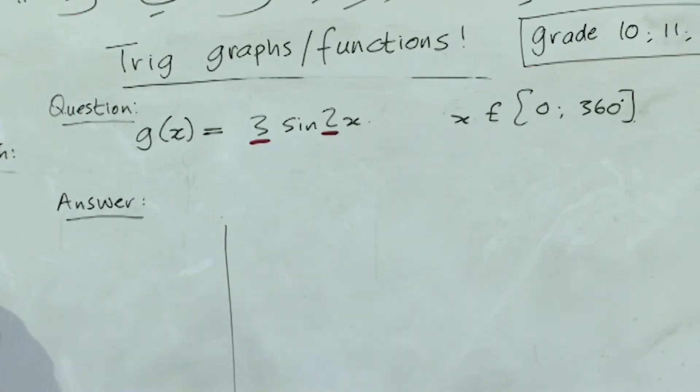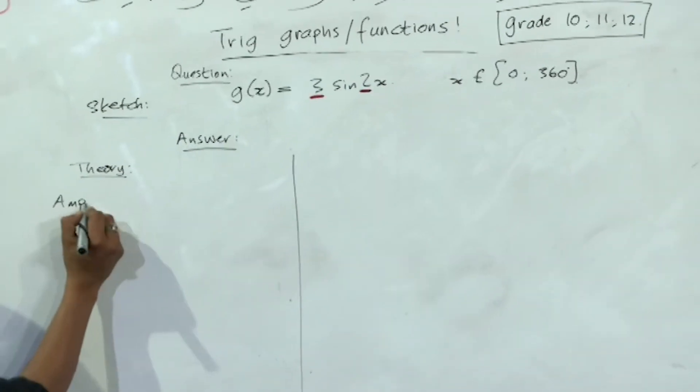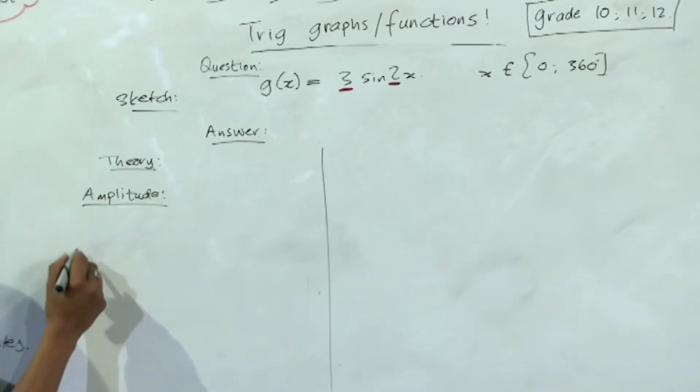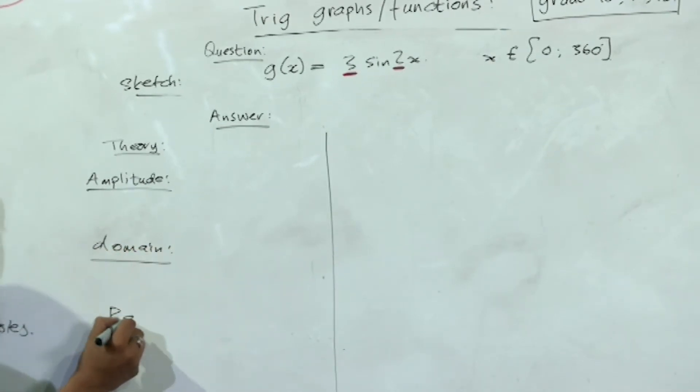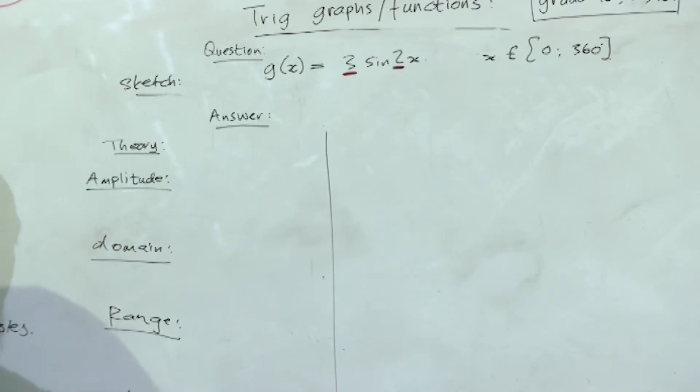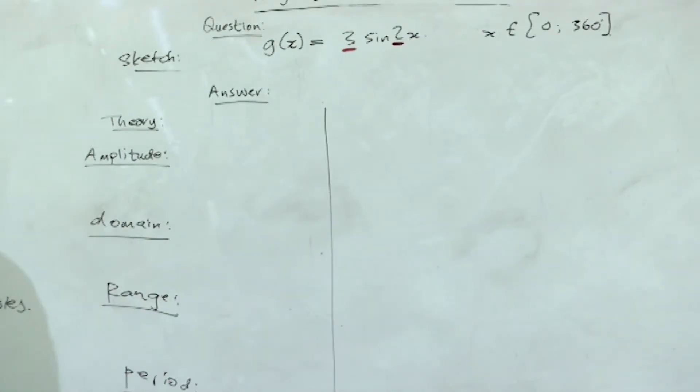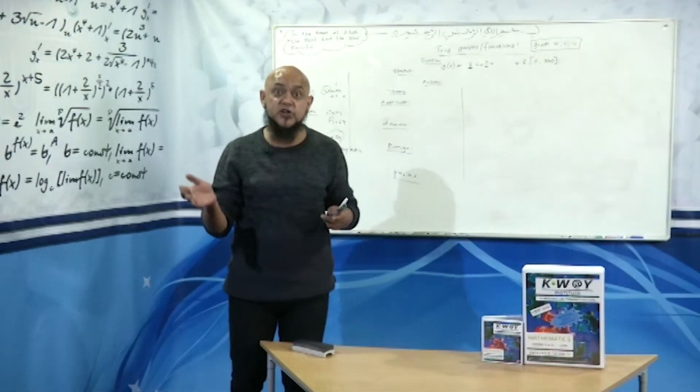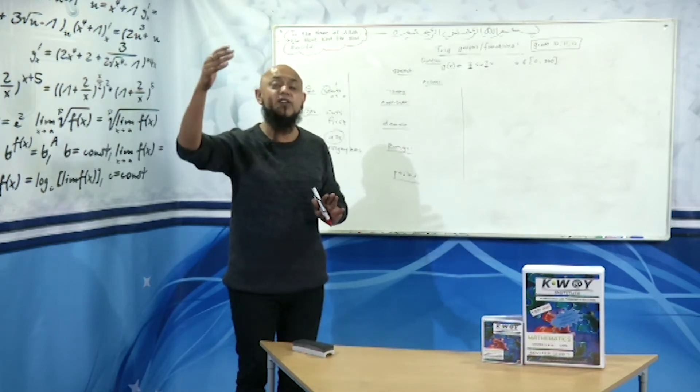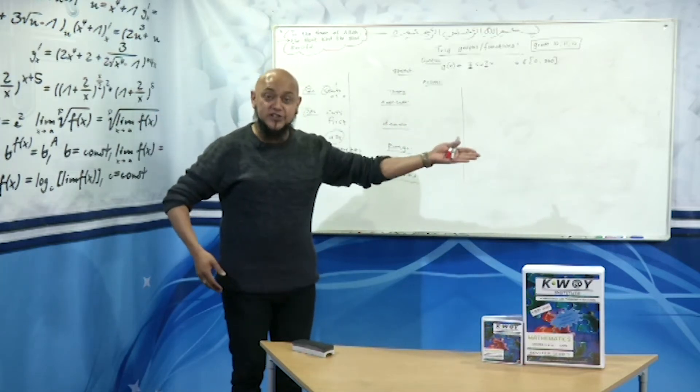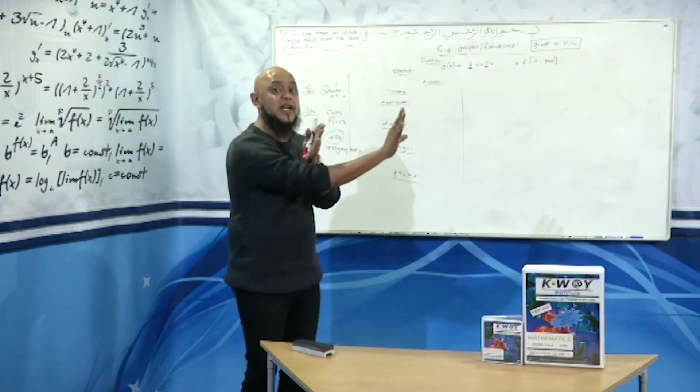So before we sketch the graph, again, theory questions that could be asked in your exam: give the amplitude of the graph, give the domain of the graph, give the range of the graph, and state the period of the graph. We're not yet into graph interpretation. Graph interpretation we'll do in another episode, in our next episode, where we're gonna put all these graphs down and you're gonna have to determine where is F of X greater than G of X, where is F of X less than G of X. We are now focusing on how to sketch and how to determine equations of these trig functions.